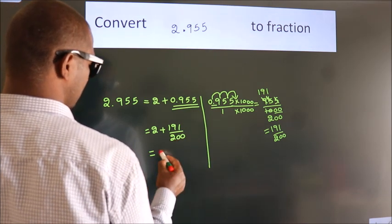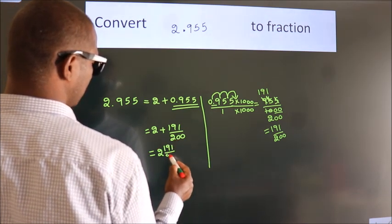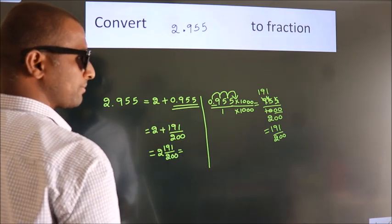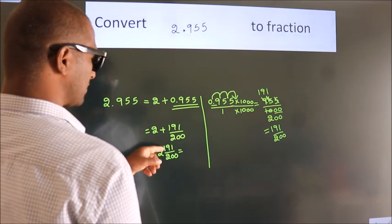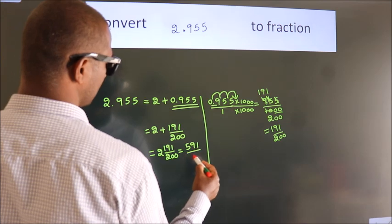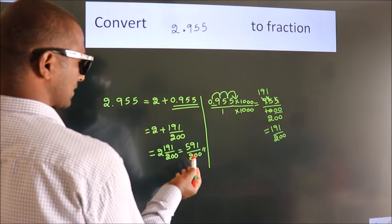In mixed fraction it is 2 and 191 over 200. And in improper fraction, it is 2 times 200, 400, plus 191, by 200. 591 by 200 is our fraction.